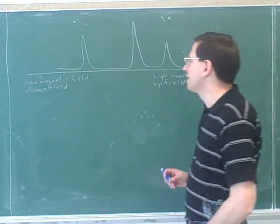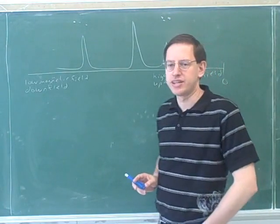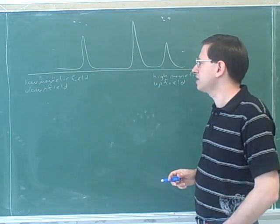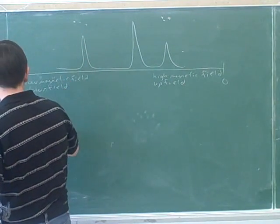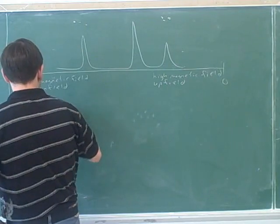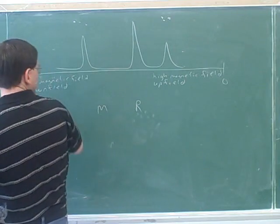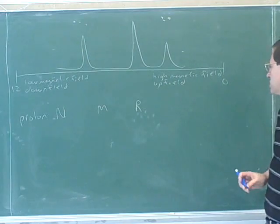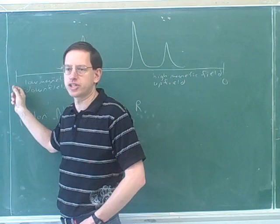However, confusingly, there's a whole other way of referring to this where we put the number zero on the right-hand side. For proton NMR, the scale basically goes from 0 to 12. And these numbers here are called the deltas, or the symbol is delta for chemical shift.